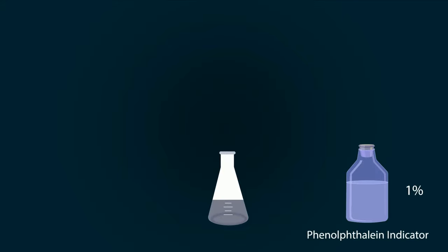Now add phenolphthalein indicator of 1% into the conical flask with the help of a dropper. Add two drops. The color will remain the same.